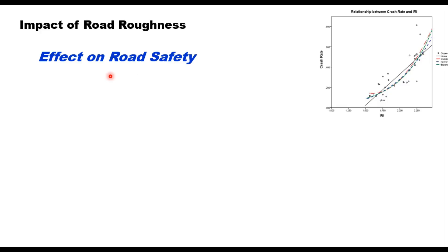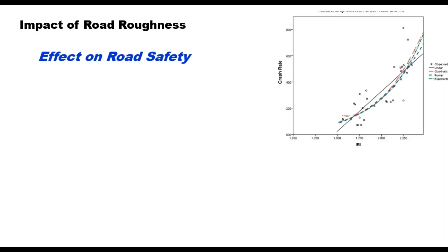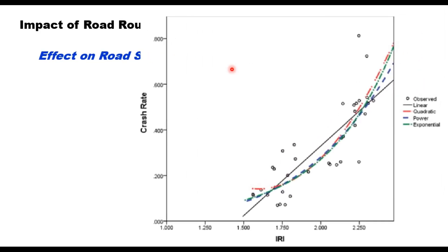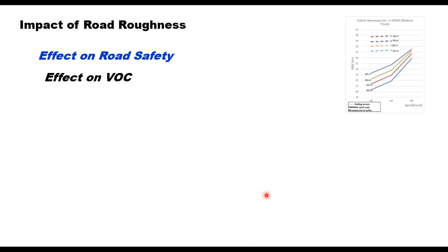Road roughness can have an impact on several factors of transportation. First is the effect on road safety — roughness can increase the risk of accidents due to reduced control on vehicles. Several studies conducted around the world indicate that when IRI increases on the road, crash rate will also increase. Generally it is linear, but some researchers have found these data points follow a non-linear relationship also.